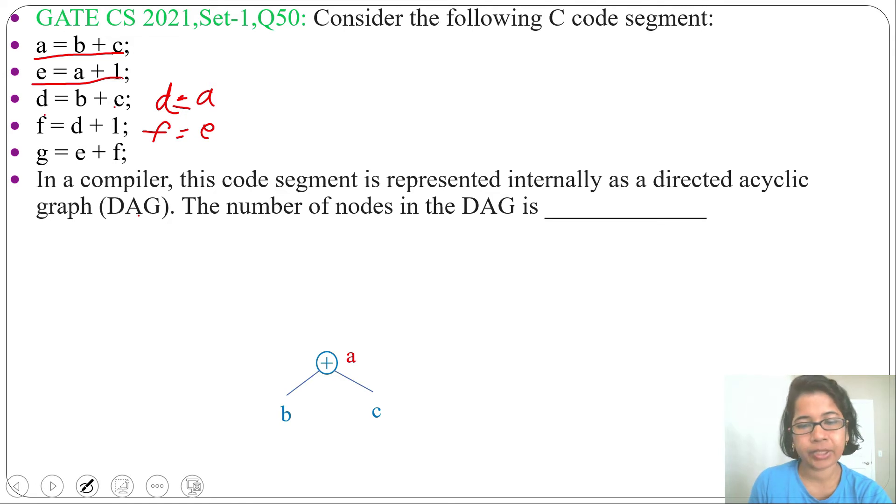Next, we'll do for e equals a plus 1. a is already there. Just create another node for 1 and another node for plus. Now for this new plus, a will be its left child while 1 will be its right side, and we'll add the label e for this plus.